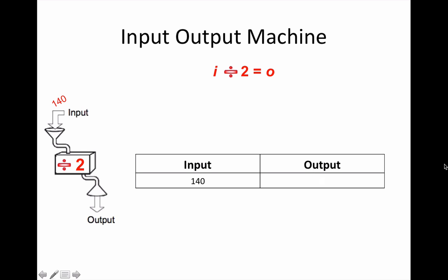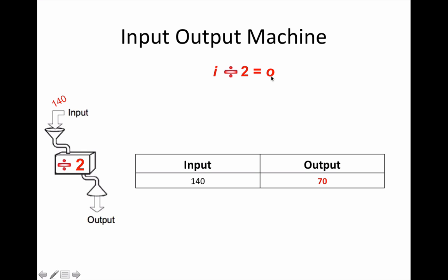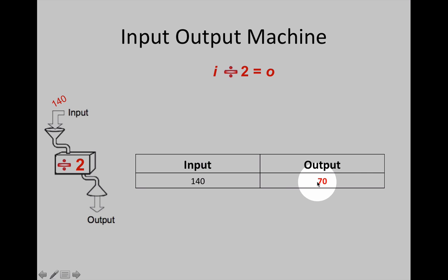Let's share 140 dollars between two siblings. The input must be divided by 2 to get the output. 140 divided by 2 equals the output. 70 is the output.